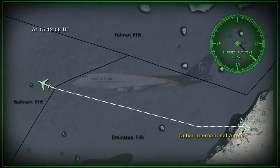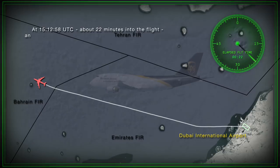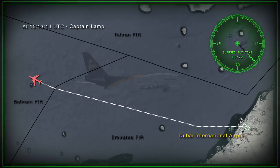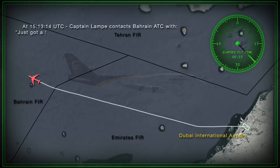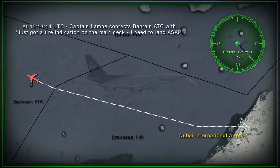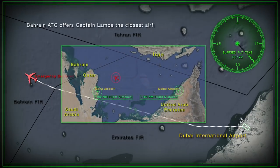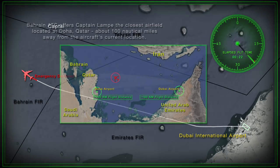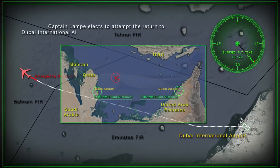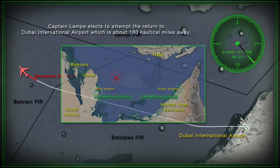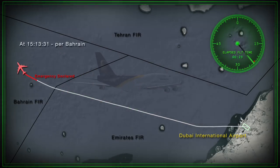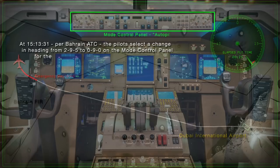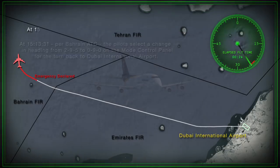At 15:12:58 UTC, about 22 minutes into the flight, an alert goes off in the cockpit: fire main deck forward. At 15:13:14 UTC, Captain Lampe contacts Bahrain ATC reporting a fire indication on the main deck and requesting to land ASAP. Bahrain ATC offers the closest airfield at Doha, Qatar, about 100 nautical miles away. Captain Lampe elects instead to attempt a return to Dubai International Airport, about 180 nautical miles away. At 15:13:31 UTC, the pilots select a heading change from 295 to 090 for the turn back to Dubai.